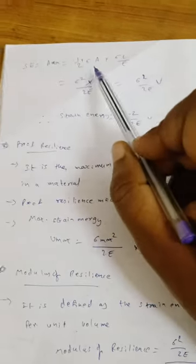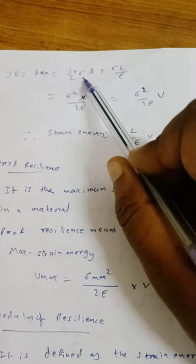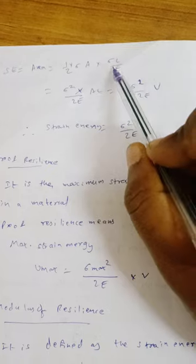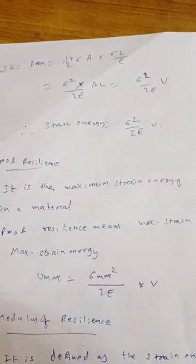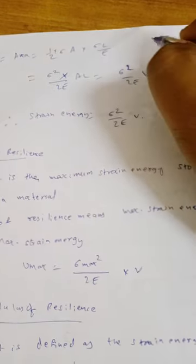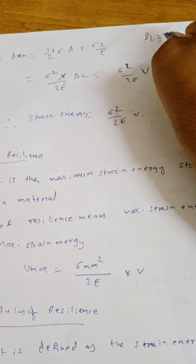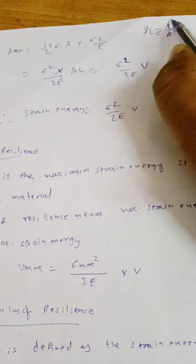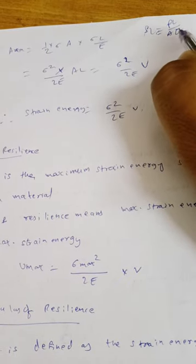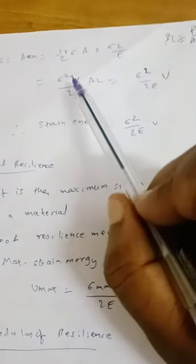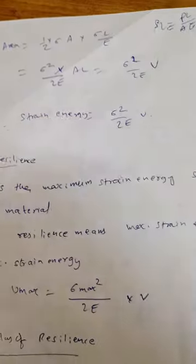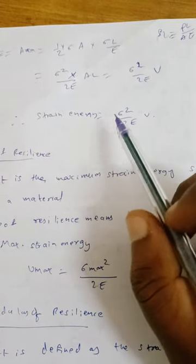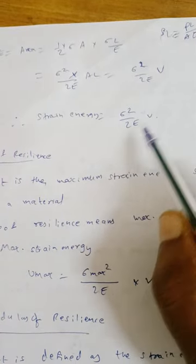We can write it as half into P into delta L, where P is nothing but stress times area (σ × A), and ΔL = PL / AE = σL / E. Substituting, we get U = σ² × A × L / 2E. Since A × L is nothing but volume V, the final formula is U = σ²V / 2E.